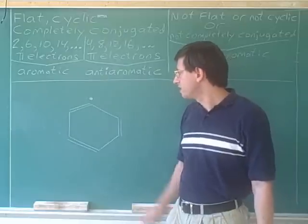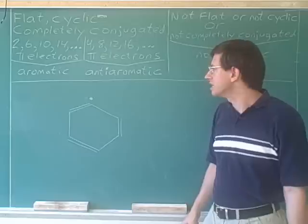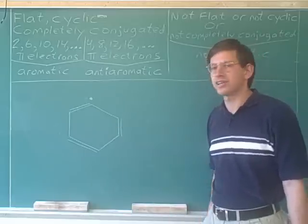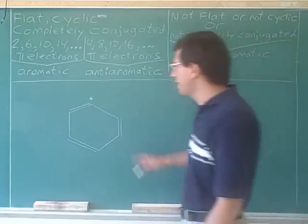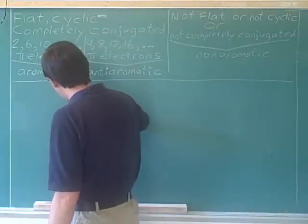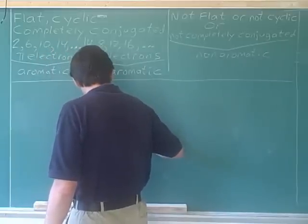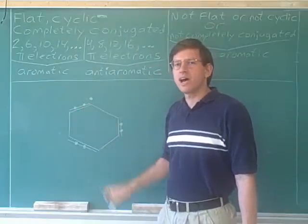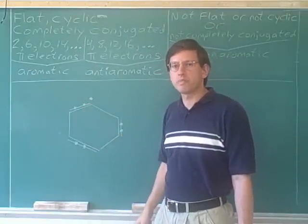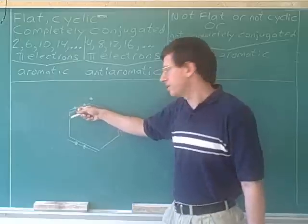It looks like benzene, but there's an unpaired electron on this top carbon. Let's try to determine whether this molecule is aromatic or non-aromatic. Let's count the pi electrons — we know there are two pi electrons in each pi bond. How about this carbon at the top? It's sp2 hybridized, so it has one p orbital. What is this carbon doing with its p orbital? Well, we know it's using its p orbital for the pi bond.